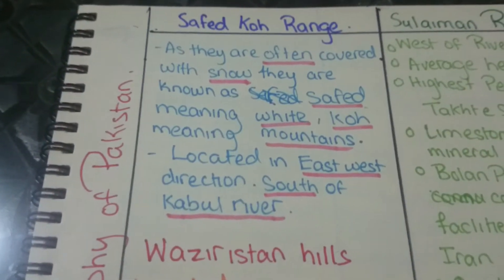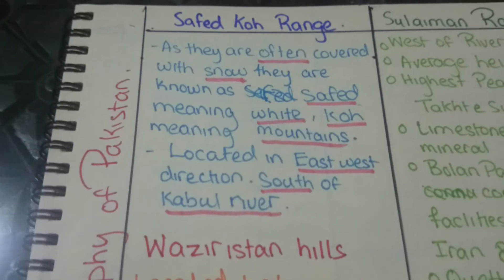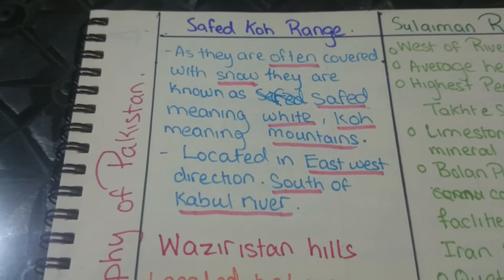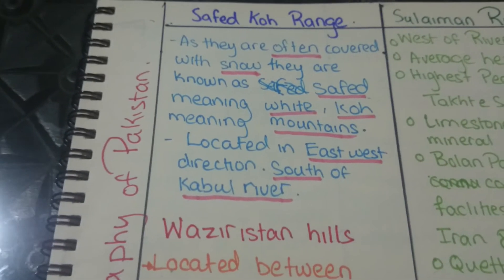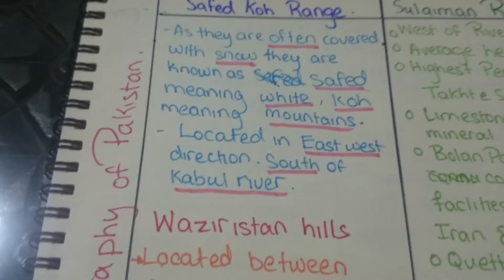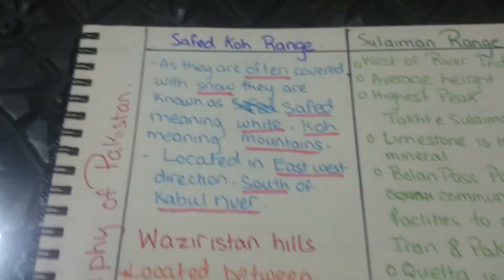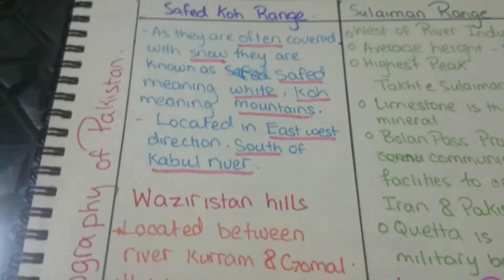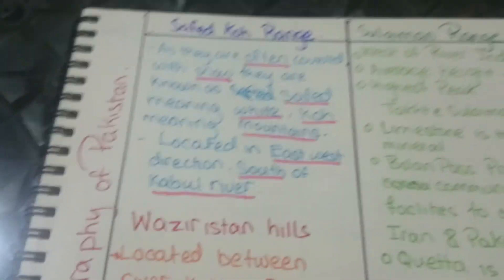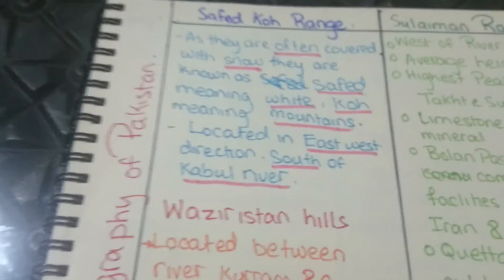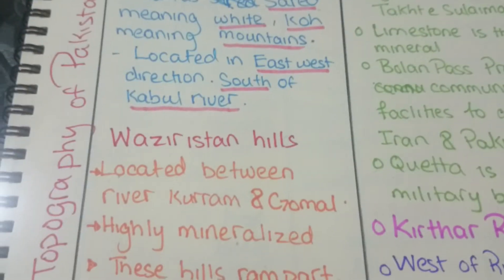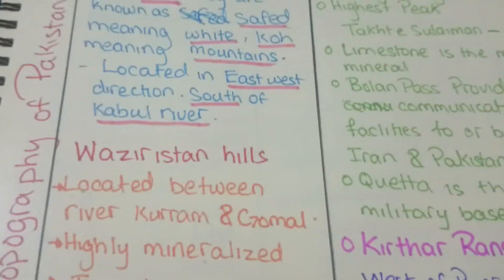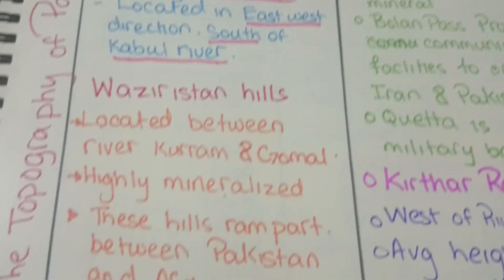Safed Kho: as these ranges are often covered with snow, they are known as Safed, meaning white, and Kho, meaning mountain — hence Safed Kho means the white mountain. They are located in the east-west direction, south of the River Kabul.